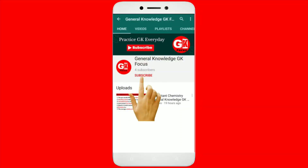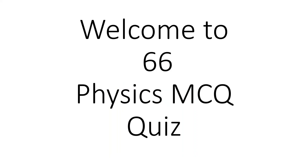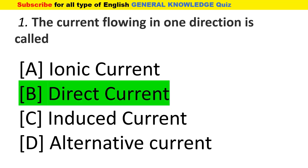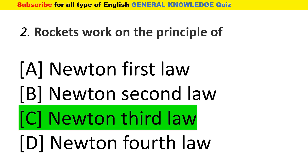Welcome to Physics MCQ Quiz 66. The current flowing in one direction is called direct current. Rockets work on the principle of Newton's third law.